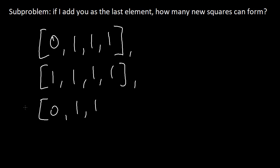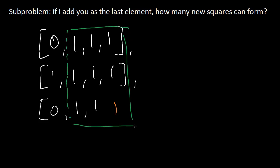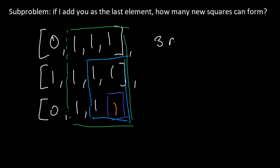The sub-problem we're going to ask is: if I add you as the last element, how many new squares can I form because of you? So let's say we're reading all the way down and we're about to read the last element, which is a one. We have a square of size three, a two by two, and a one by one. So in total, we created three new squares by adding this last element.